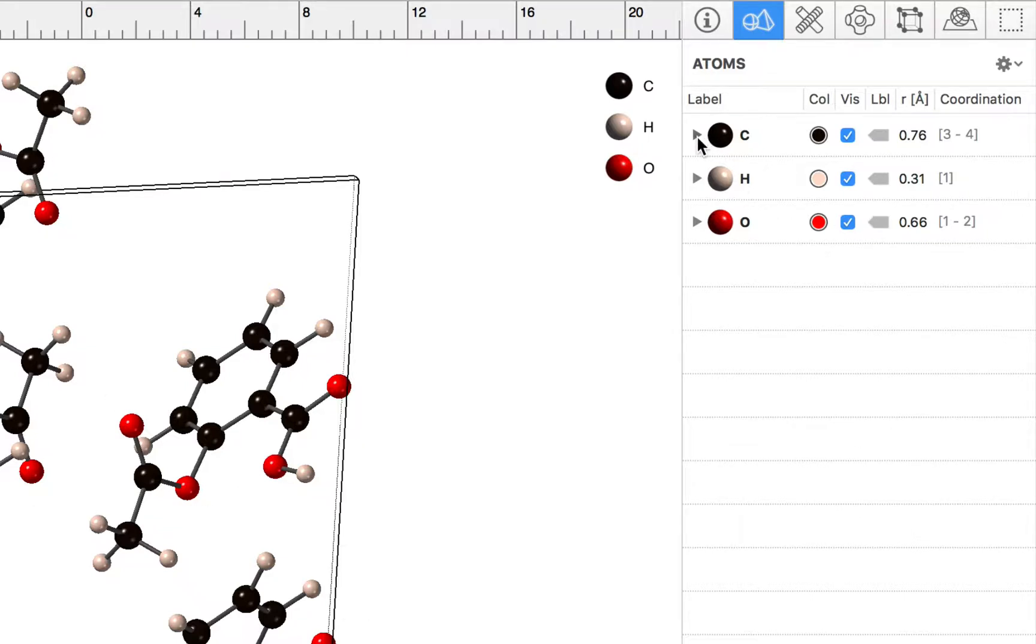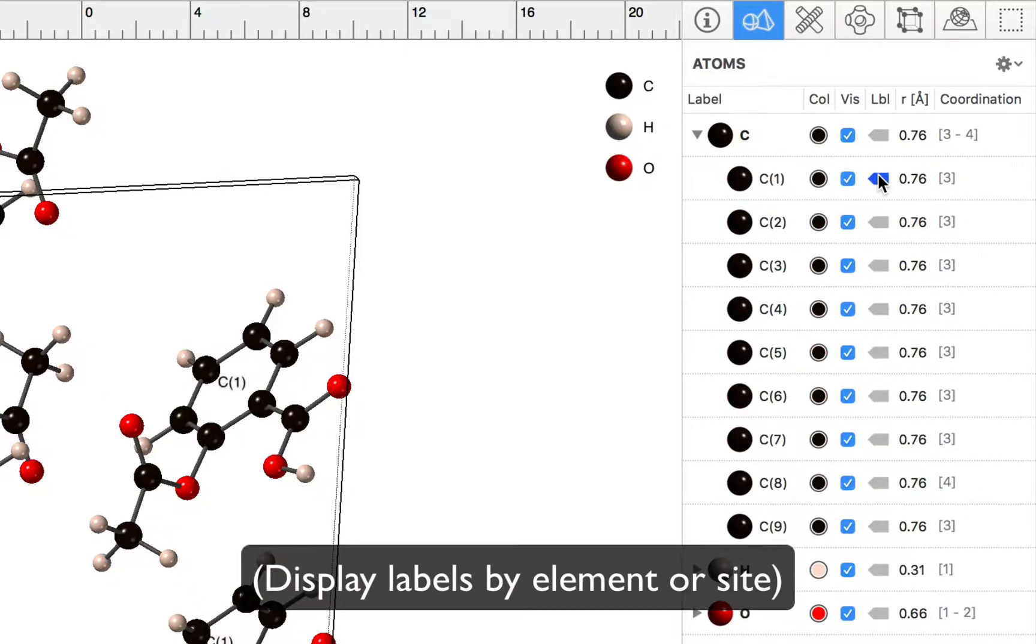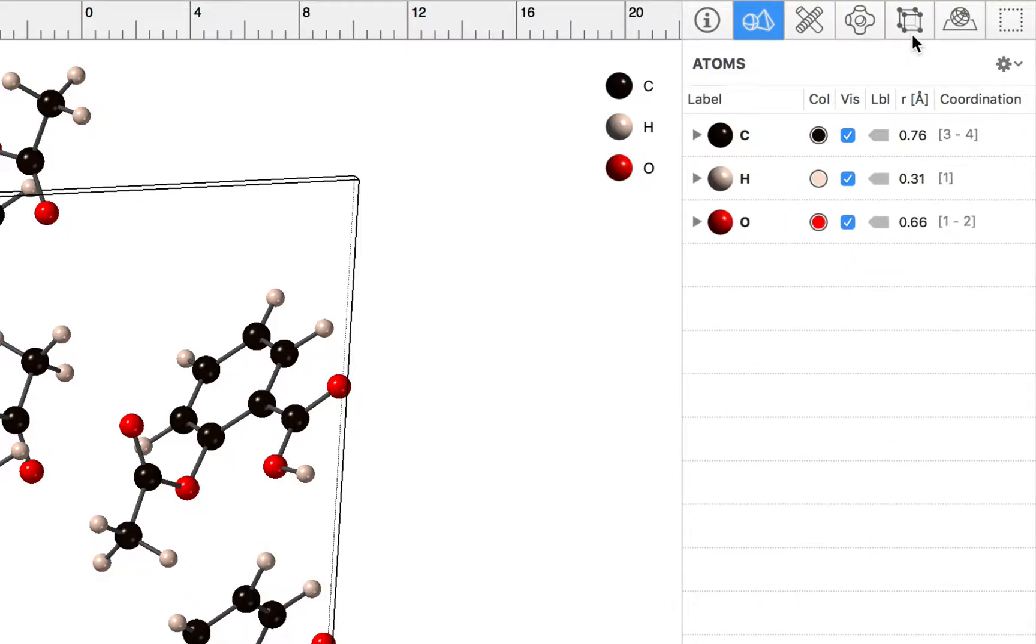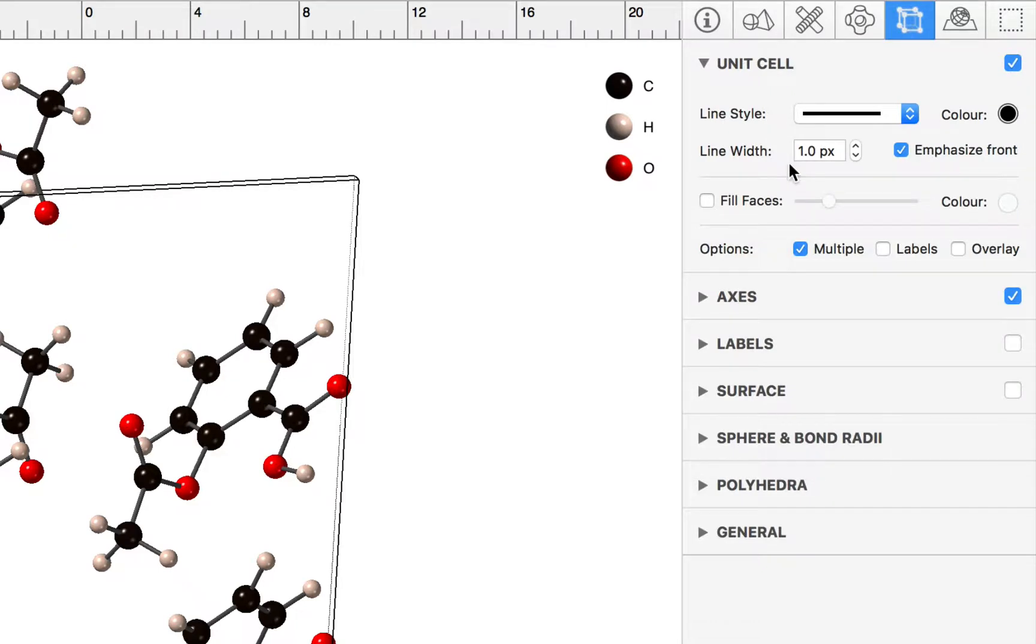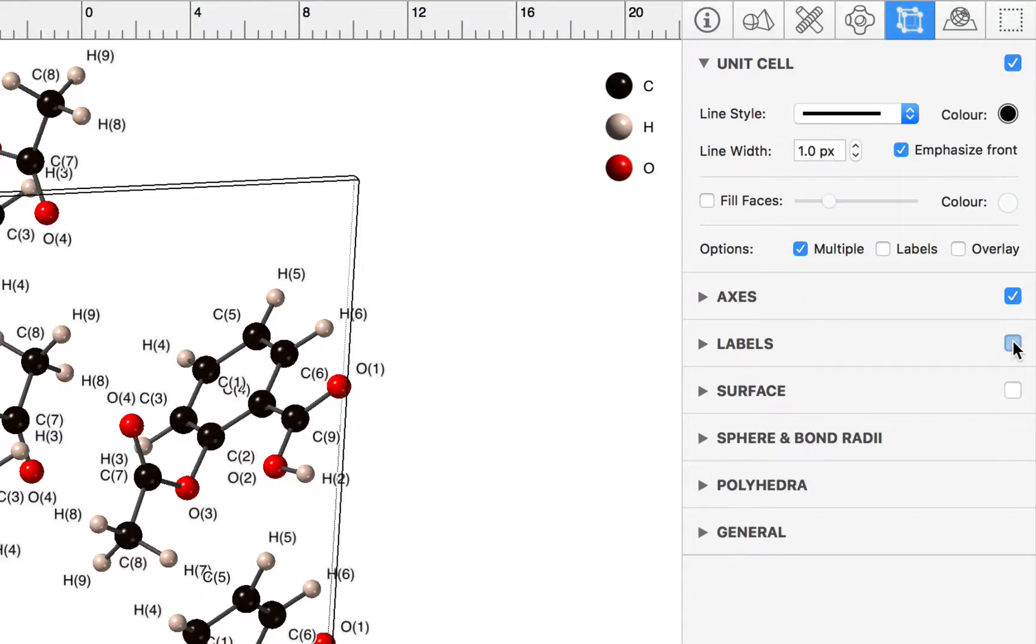We can also toggle labels on and off on a site basis, and we can toggle all labels on or off using the model inspector using the little checkbox in the labels group.